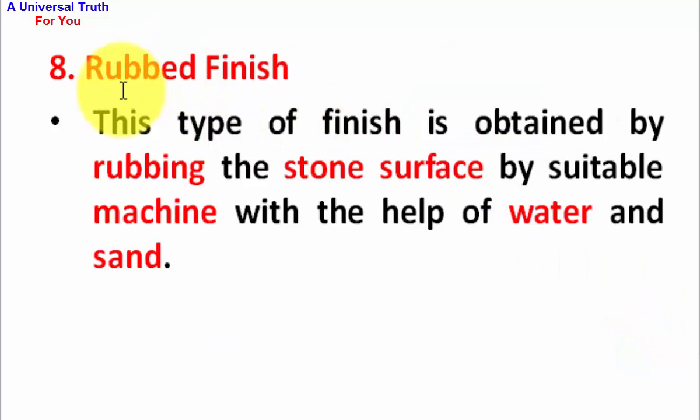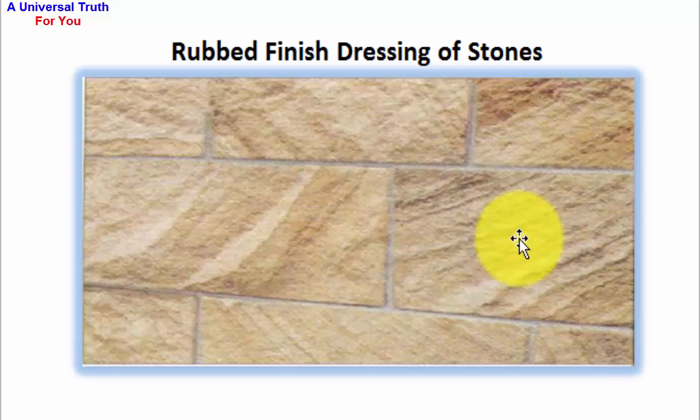Number 8, Rubbed finish. This type of finish is obtained by rubbing the stone surface by a suitable machine with the help of water and sand. This is picture of rubbed finish dressing of stones.